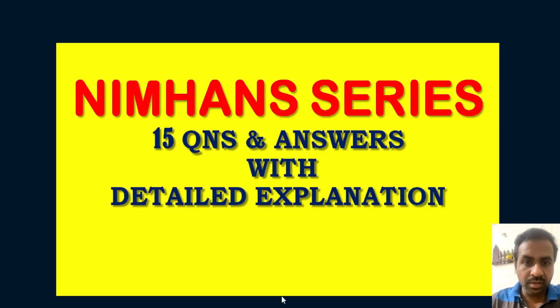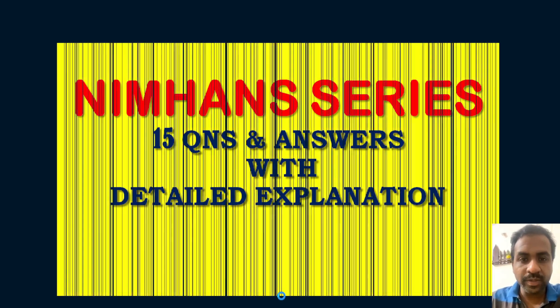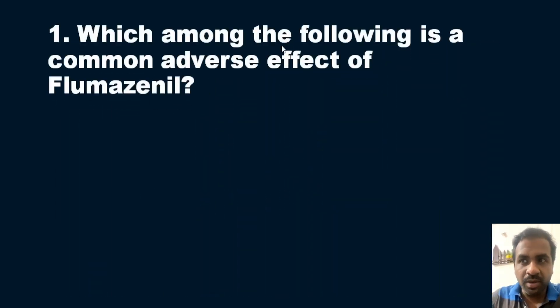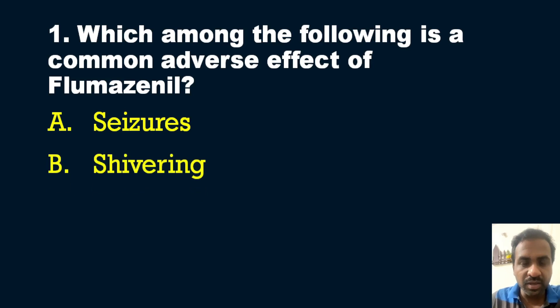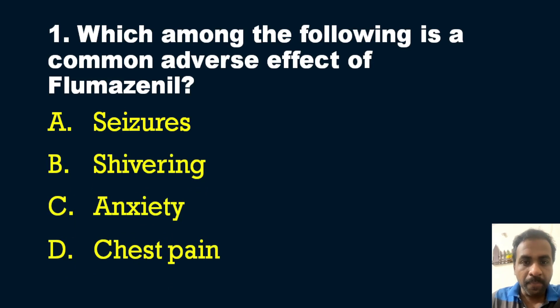Watch the video till the end without skipping, because explanations are also very very important. Here comes the first question in the new series: Which among the following is a common adverse effect of flumazenil? The options are: A) Seizures, B) Shivering, C) Anxiety, and D) Chest pain.